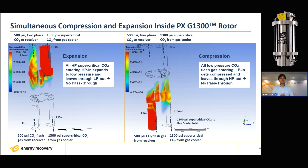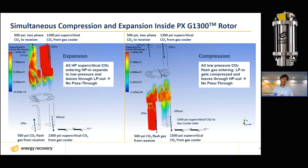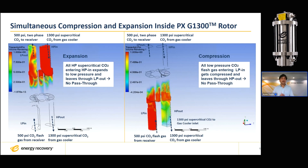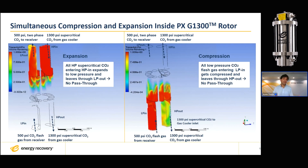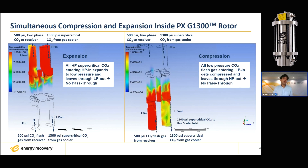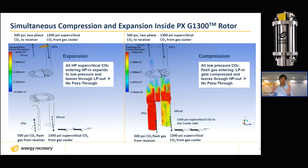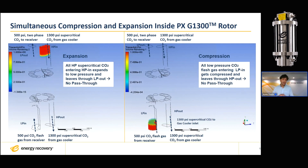If you focus your attention on the right half, what you are seeing is a low-pressure CO2 gas entering the rotating duct of the pressure exchanger. That gas can be anywhere around 550 psi if it's coming from the receiver, or it could be as low as 380 psi if it's directly coming from the evaporator. That low-pressure gas then gets sealed in the rotating duct as the duct continues its rotation.